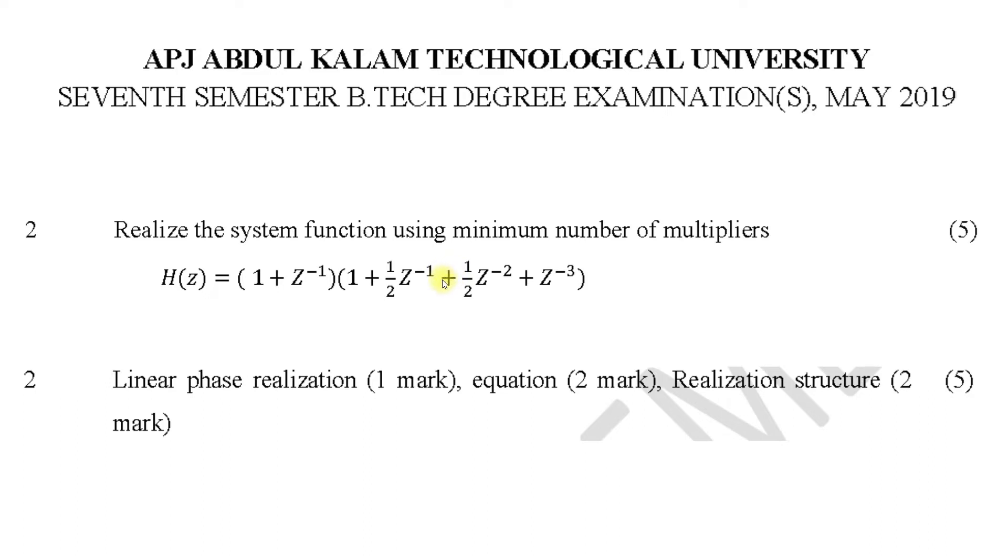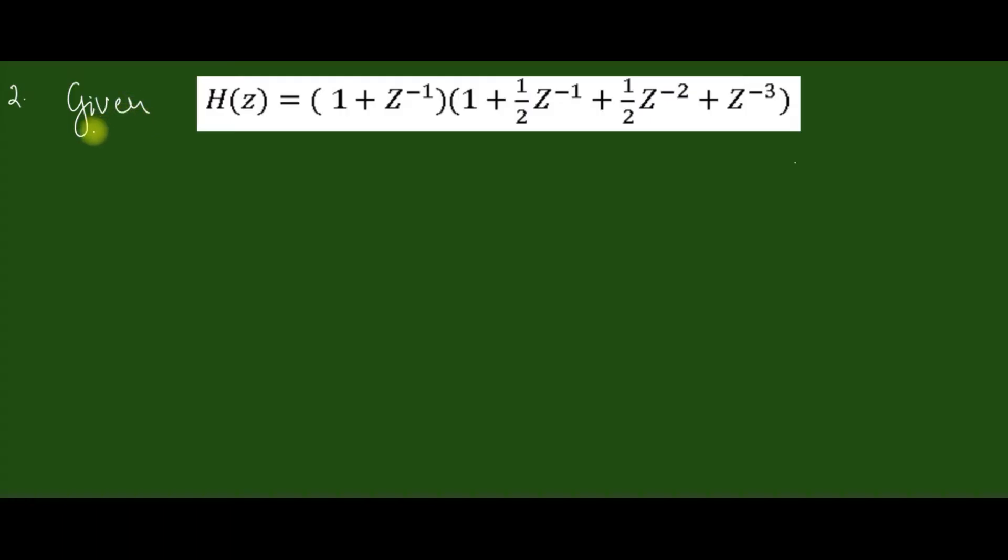So let us try to solve this one. Given the system function, the minimum number of multipliers realization is possible when the filter is linear phase FIR filter. As the first step, you can rewrite this as a cascade system.